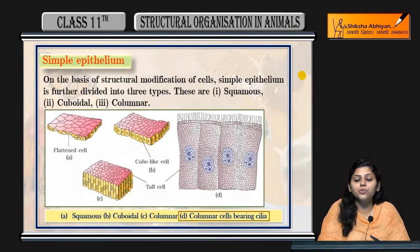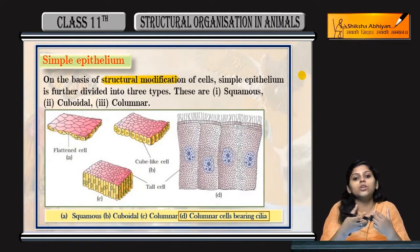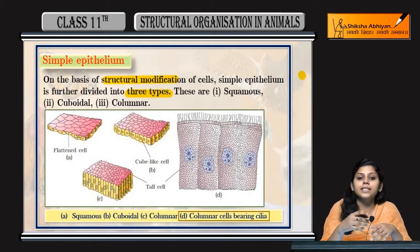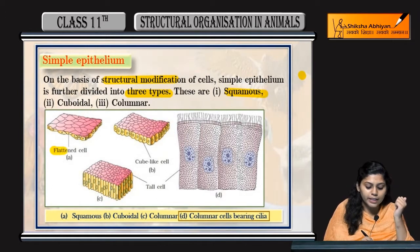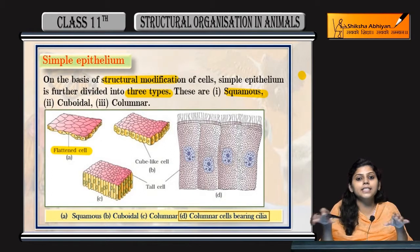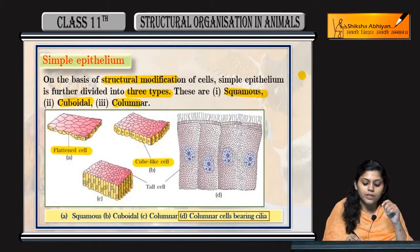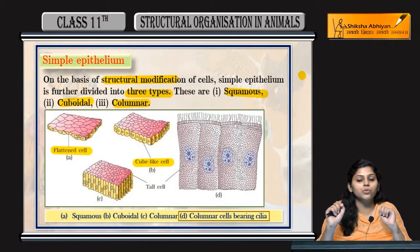Now coming to simple epithelial tissues. On the basis of structural modification of cells, simple epithelial tissues are divided into three types. First one is squamous — squamous cells are flattened cells, so a layer of flat cells will be called squamous tissue. Cuboidal cells have a cube-like structure. Third one is columnar cells, meaning column-like structures. Cells present in a layer as column-like structures are columnar simple epithelial tissues.